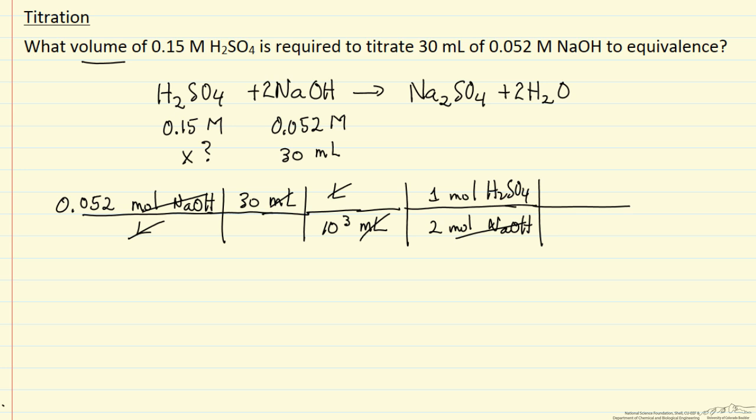And we know we have 0.15 moles of sulfuric acid per liter, and again, since we're interested in milliliters, 10 to the third milliliters. So again, if we look at units,